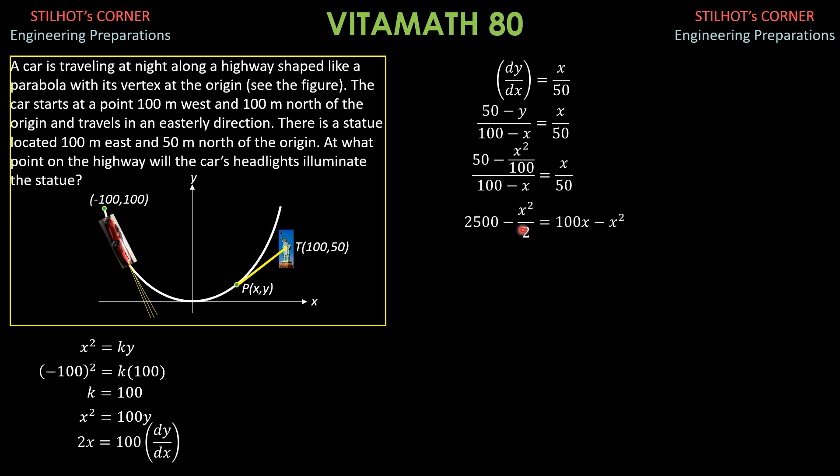Transpose 100x to the left. So, minus 100x. So, x squared over 2 minus 100x plus 2,500 equals 0. Multiply everything by 2. So, x squared minus 200x plus 5,000 equals 0. So, using your calculator, because that is allowed, we can now find x and x should be less than 100. The other root may be more than 100, so that's absurd.